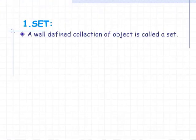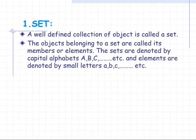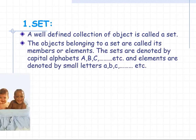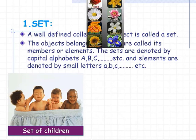In this video we discuss some basic definitions and operations involving sets. A well-defined collection of objects is called a set. The objects belonging to a set are called its members or elements. Sets are denoted by capital alphabets A, B, C and the elements are denoted by small letters a, b, c. Examples include the set of letters, the set of flowers, and the set of books.